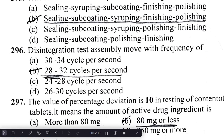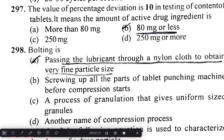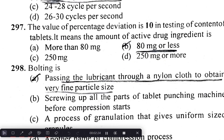The disintegration test assembly moves with a frequency of 28–32 cycles per minute. The value of percentage deviation is 10 in the testing of content of tablets.